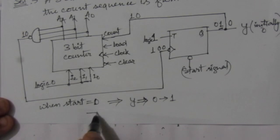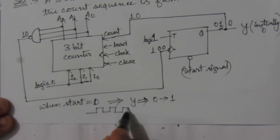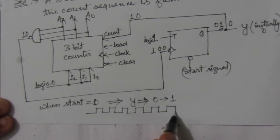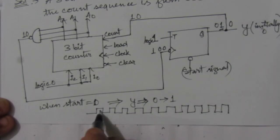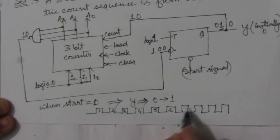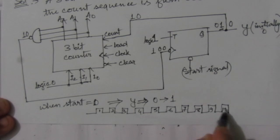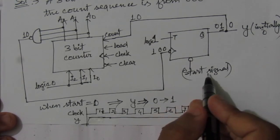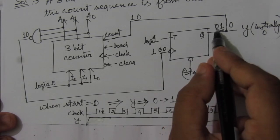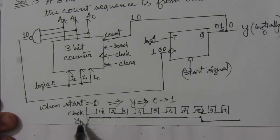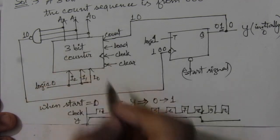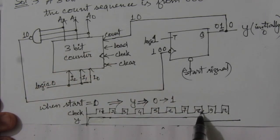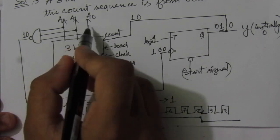Looking at the timing diagram with clock pulses 1 through 10: at a certain point we receive the start signal, and the output Y transitions from 0 to 1. Y remains in the 1 state for 8 clock cycles — from the state 000 up to 111 there are 8 clock cycles. When these 8 clock cycles are complete, the counter output will be 1, 1, 1.